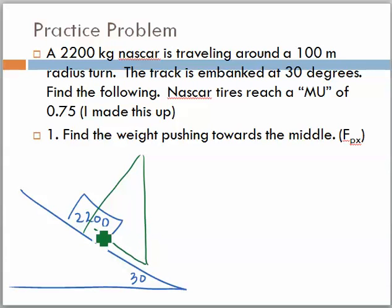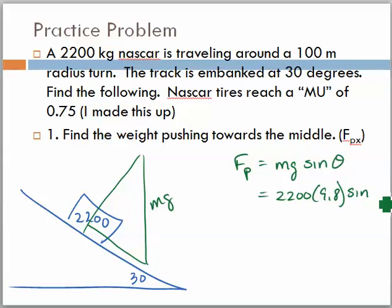I know that this is mg. If I want to find Fp of x, I've got to find Fp. So, to find Fp, we know that Fp is equal to mg sine of theta. So, what I'm going to do here then is say that this becomes 2200 times 9.8 times the sine of 30 degrees. What we find out then is that Fp turns out to be 10,780 newtons.